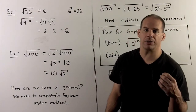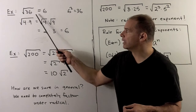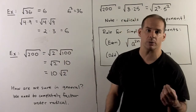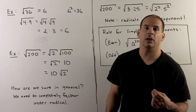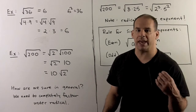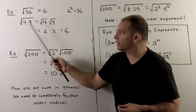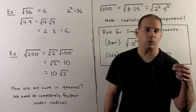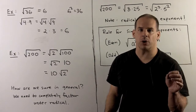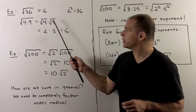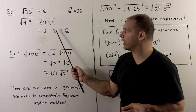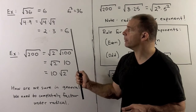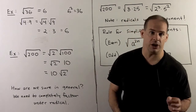For a simple example, let's consider the square root of 36. By the definition, this equals 6, because 6 squared equals 36. Using the multiplication rule: factor 36 as 4 times 9, apply the rule to get square root of 4 times square root of 9. Square root of 4 is 2, square root of 9 is 3, multiply to get 6. That verifies what we get from the definition.